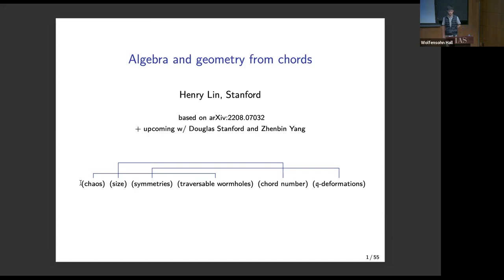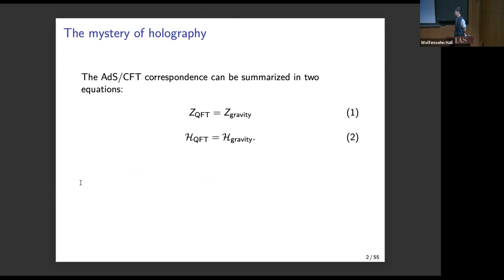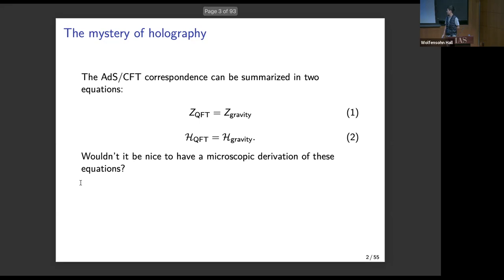Let's start with two equations. The first one equates the partition function of gravity with the partition function of quantum field theory, and the second one equates their Hilbert space. Wouldn't it be nice to have a microscopic derivation of these equations? By that I mean starting from just the UV definition of the theory and doing some transformations without any input from knowledge of string theory.